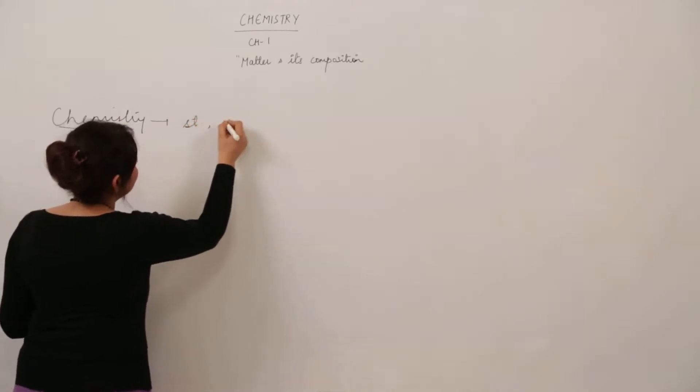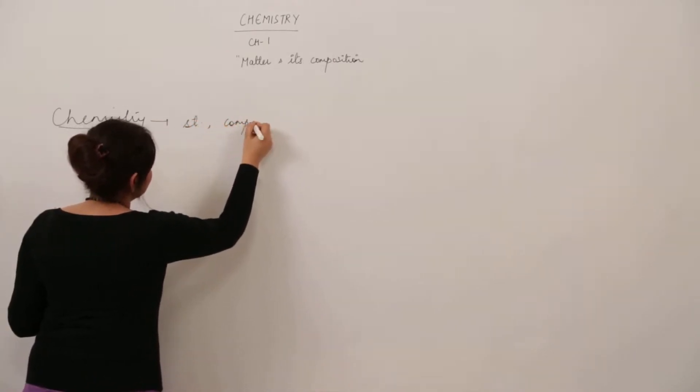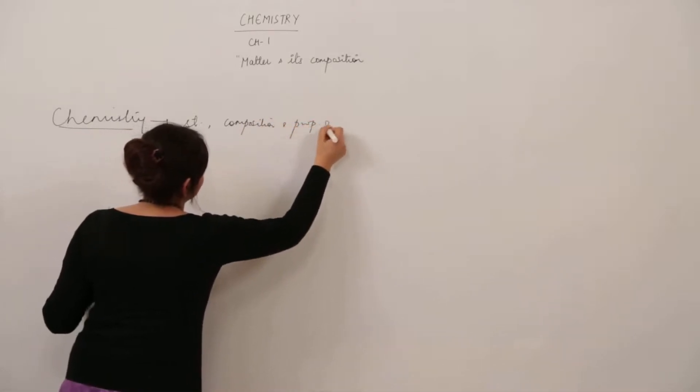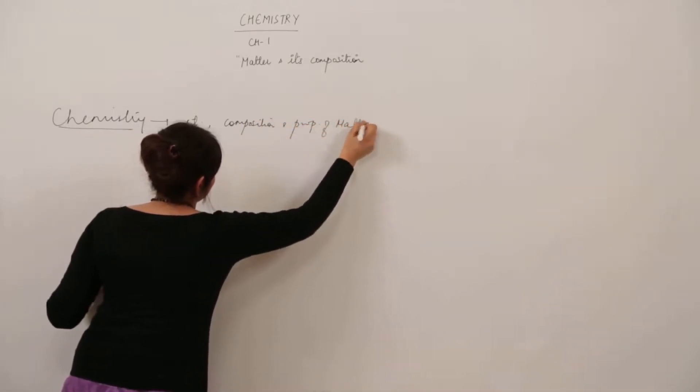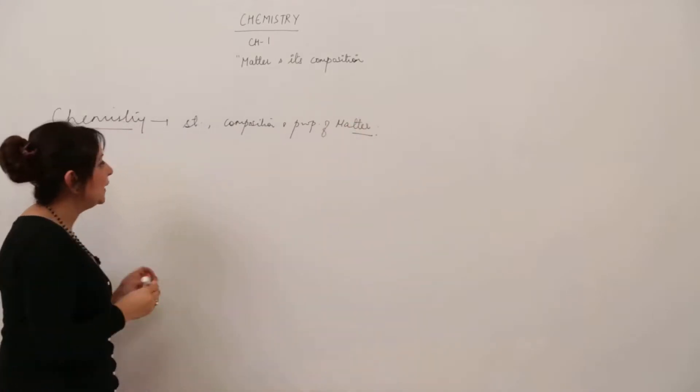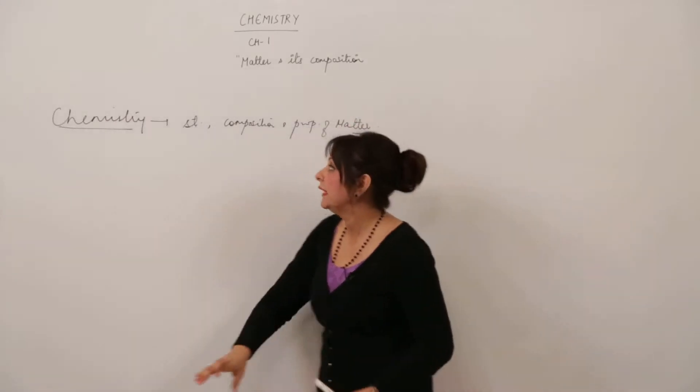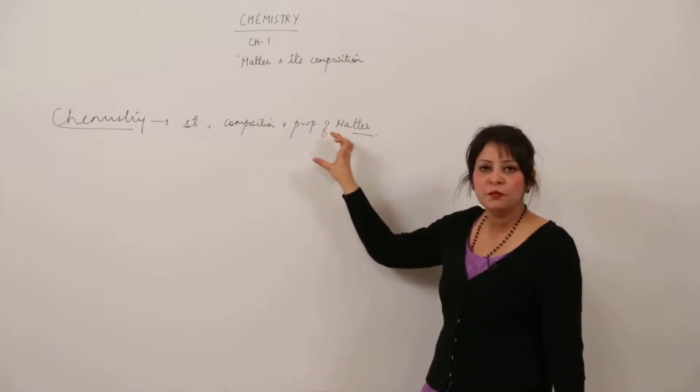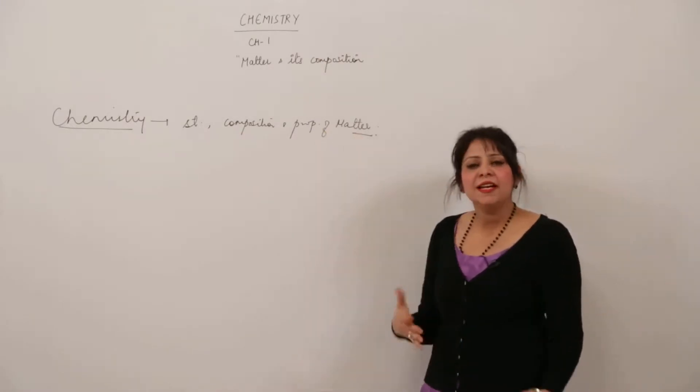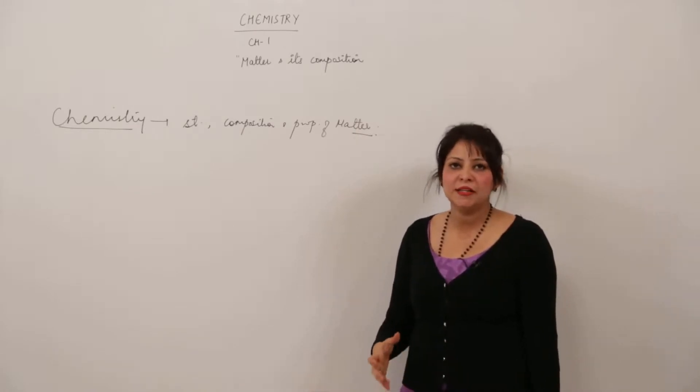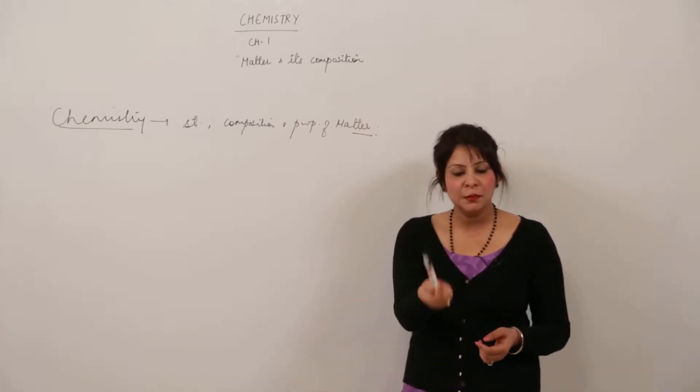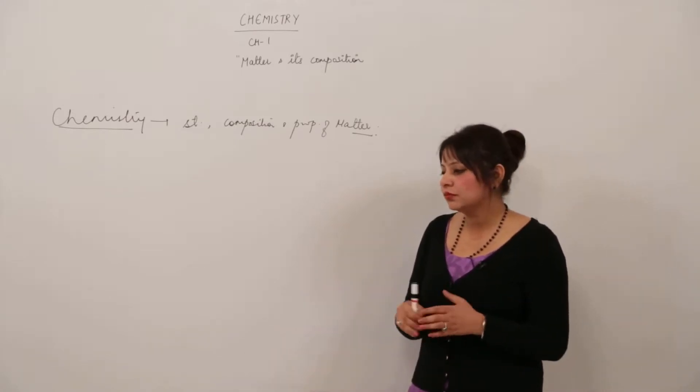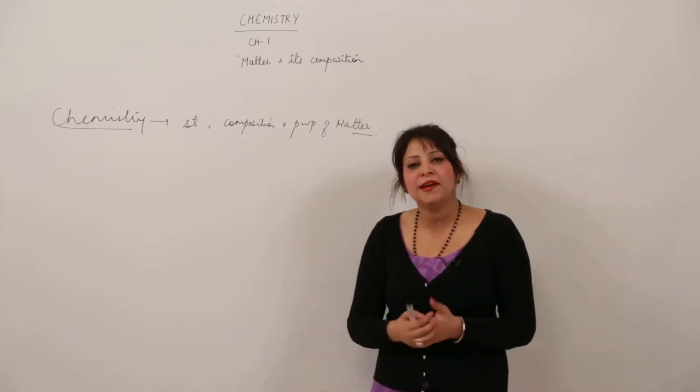Chemistry is the branch of science that deals with the structure, composition, and properties of matter. Matter is anything which occupies space and has mass. If I take this marker, or ask you about a chair or table—everything is matter which surrounds us.